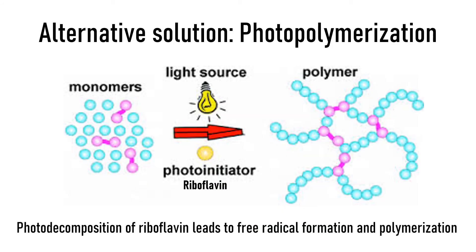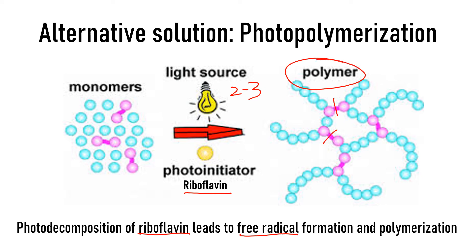Another solution is photopolymerization, where we replace TEMED and APS with riboflavin. In photopolymerization, the gel is placed in light for 2–3 hours. Photodecomposition of riboflavin leads to the formation of free radicals which help in creating linear polymerization. The linear chains are then cross-linked using bisacrylamide.